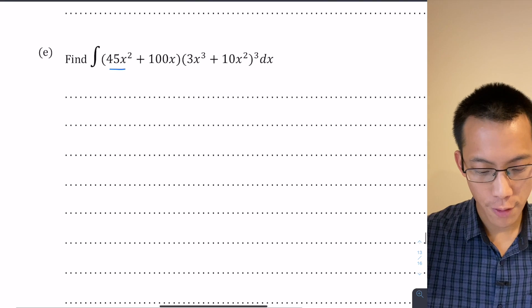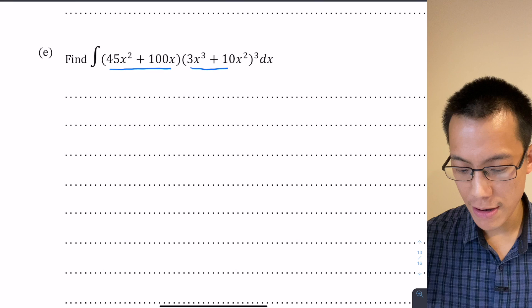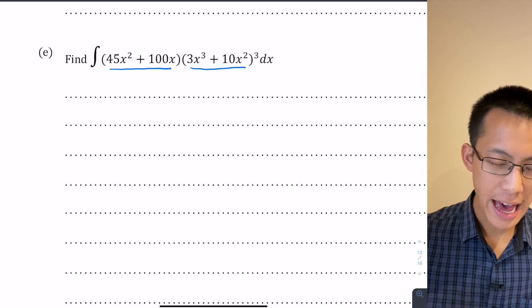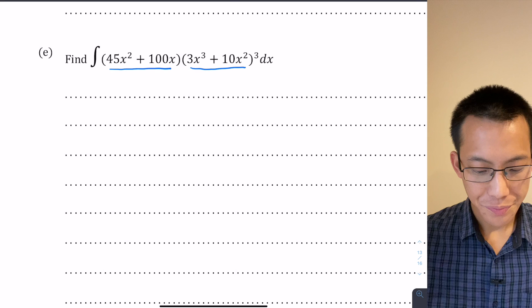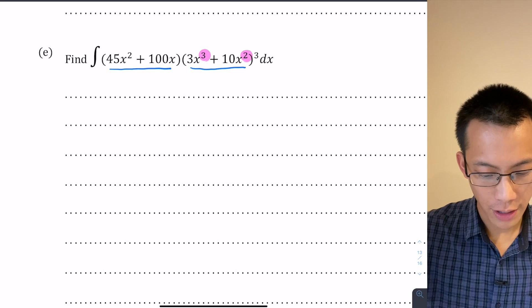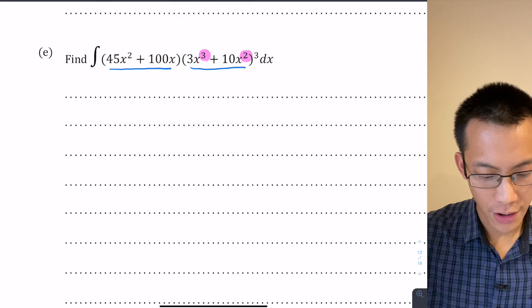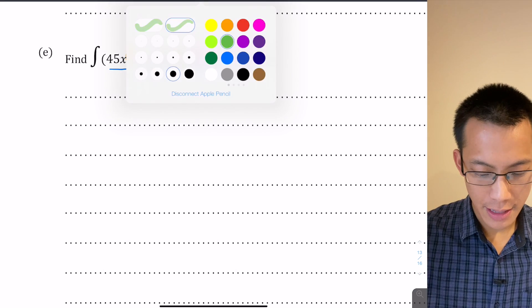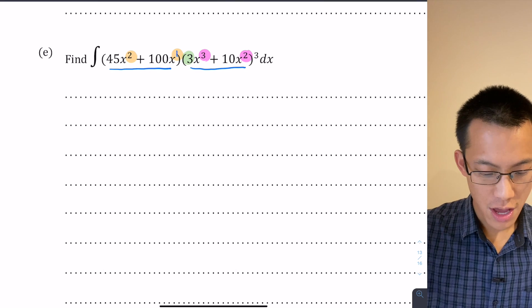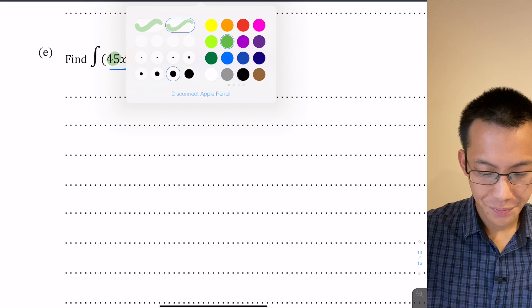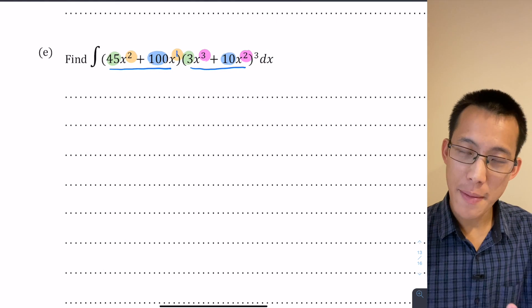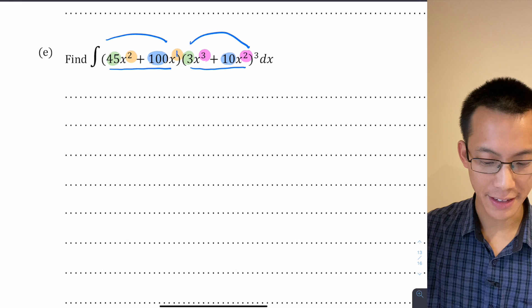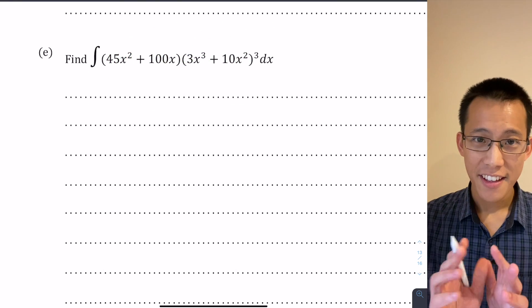Have a look — these two things are being multiplied together: you've got 45x² + 100x and then you've got 3x³ + 10x². Look carefully at these two functions. The power here compared to the power here — it's one less. And this power compared to this one is also one less. You've also got this term which is a multiple of 3, this one which is also a multiple of 3, and then 100 which is a multiple of 10. So there is a relationship between everything in one set of brackets and everything in the other.